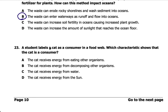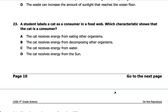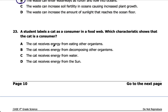Number twenty-three: a student labels a cat as a consumer in a food web. Which characteristic shows the cat as a consumer? The answer is A — the cat receives energy from eating other organisms. For example, a cat eating a mouse is the cat being a consumer. A cat is not a producer; it does not make its own food, does not get its energy from the sun or from water — it gets its energy from eating other organisms.